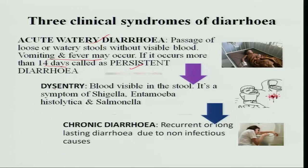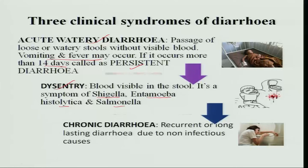Dysentery is another type of diarrhea where blood is visible along with the stool. It is a symptom of Shigella, Entamoeba histolytica, and Salmonella. These three organisms generally cause dysentery and chronic diarrhea.